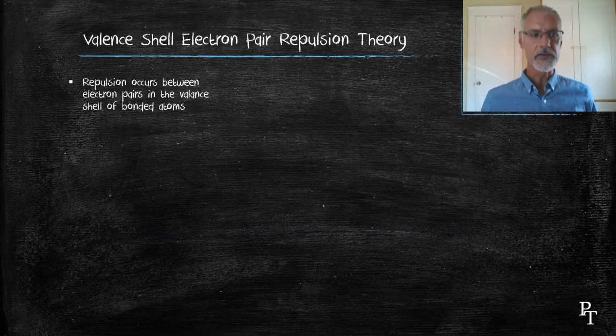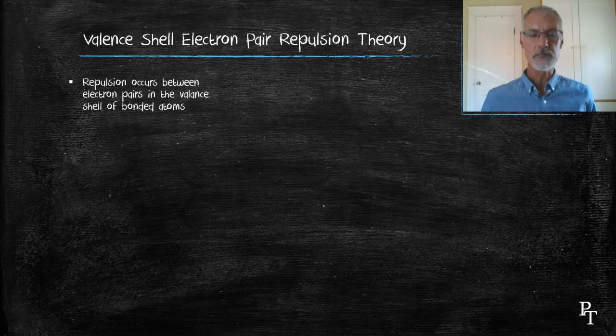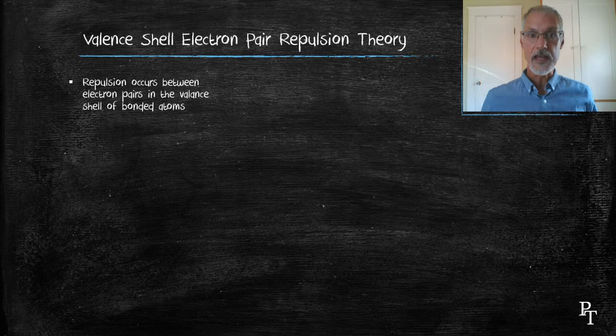Many of your texts will refer to what's called the valence-shell electron pair repulsion theory, and the essence of that theory is the electrons act as pairs, and these pairs of electrons that are in the valence shell repel each other.